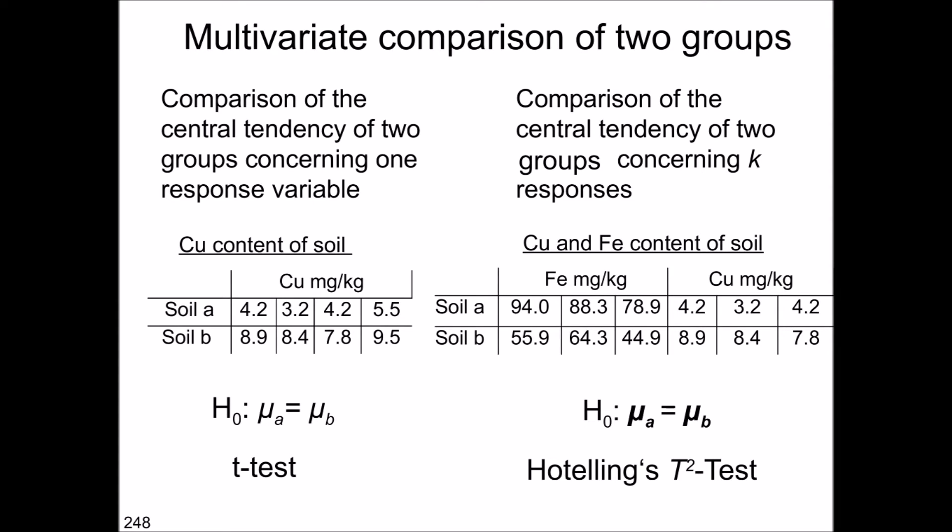Why should we use a Hotelling t-square test? You could also test individually the iron and copper content between two soil types, but note that the results for a series of t-tests are not necessarily identical to the results of the Hotelling t-square test. Also, if you do multiple testing, you have to account for multiple testing in terms of the alpha error, because otherwise you have an inflation of the alpha error — and you don't need to do this for the multivariate case.